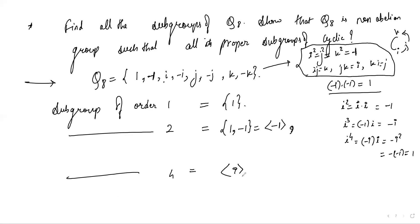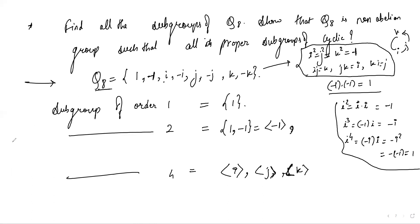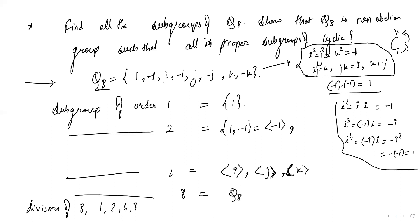The groups generated by i, j, and k each have order 4. There is no subgroup of order 3, because by Lagrange's theorem the order of a subgroup divides the order of the group. Q8 has order 8, so the only possible orders are 1, 2, 4, and 8.